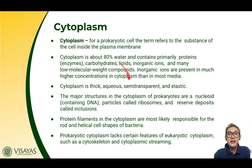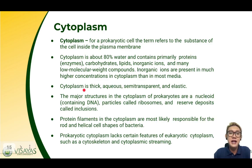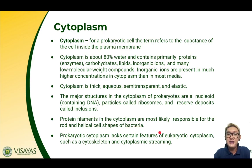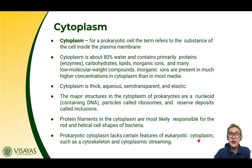Now let us talk about the cytoplasm. For a prokaryotic cell, the cytoplasm refers to the substance of the cell inside the plasma membrane. It is about 80% water and contains primarily proteins, carbohydrates, lipids, inorganic ions, and many low molecular weight compounds. Inorganic ions are present in much higher concentration in the cytoplasm than in most media. The cytoplasm is thick, aqueous, semi-transparent, and elastic. The major structures in the prokaryotic cytoplasm are a nucleoid containing DNA, particles called ribosomes, and reserve deposits called inclusions. Protein filaments in the cytoplasm are most likely responsible for the rod and helical shapes of bacteria. Prokaryotic cytoplasm lacks features of eukaryotic cytoplasm such as a cytoskeleton and cytoplasmic streaming.